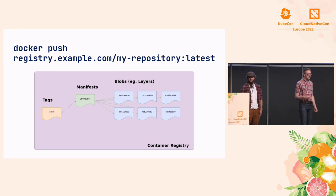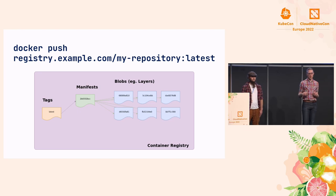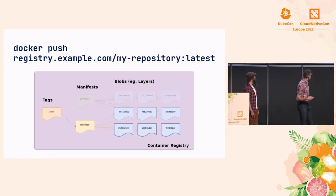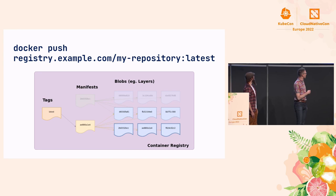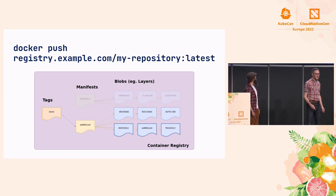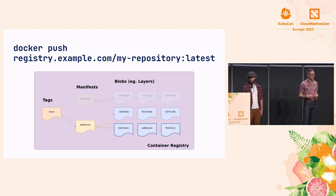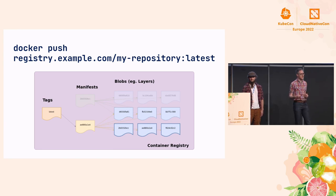The tag actually gets pushed as part of pushing the manifest — it's additional metadata attached to the manifest. Different container images can share layers. As a registry client, we can push a shared layer again if we want — the registry will deduplicate it. But as an optimization, we can check whether the registry already has that layer and skip pushing it. Most real client implementations will do this.